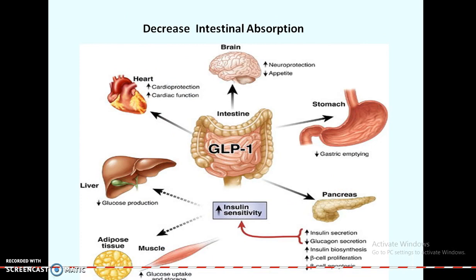If intestinal absorption of glucose is decreased, glucagon-like peptides decrease the motility of the GI tract, reducing gastric emptying and thereby lowering glucose levels in the blood. Alternatively, decreasing intestinal appetite results in less glucose intake.